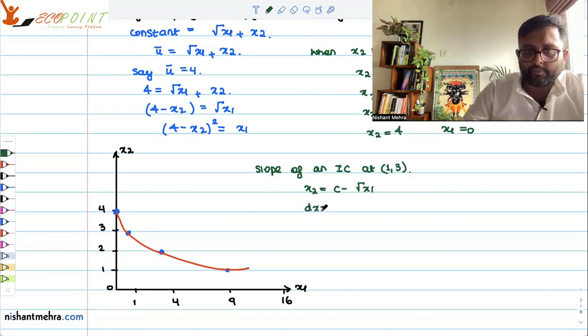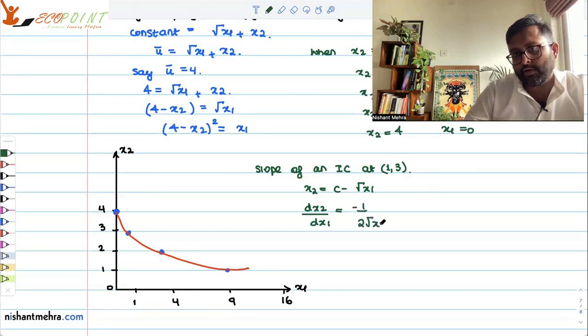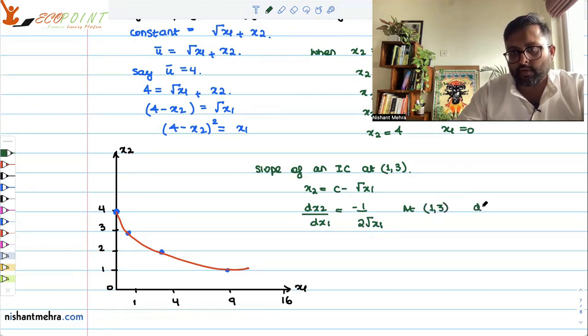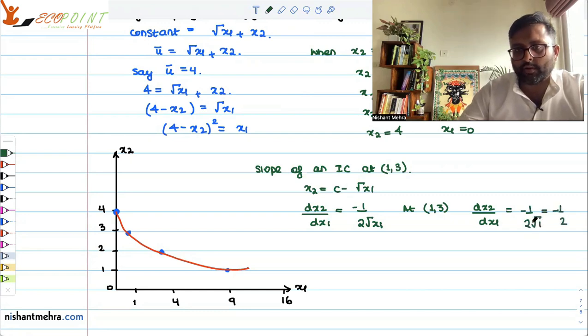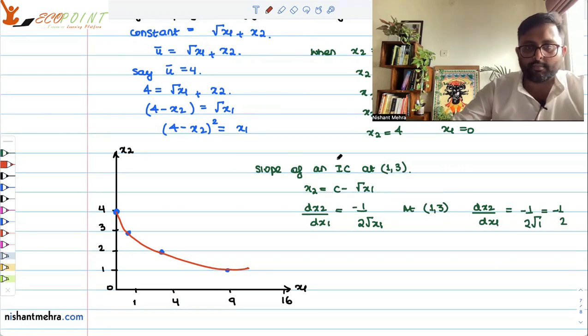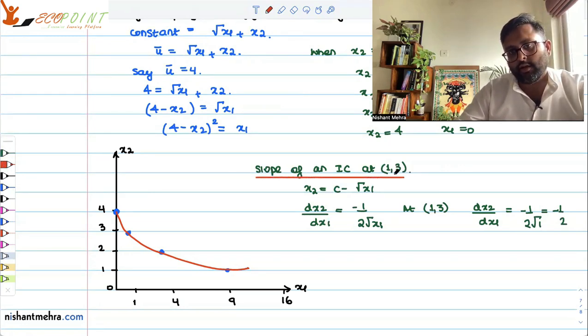So slope of the indifference curve is given by dx2 upon dx1. That is given by minus 1 upon 2 root x1. So at (1,3), this dx2 upon dx1 will look like minus 1 upon 2. That is minus 1 upon 2.